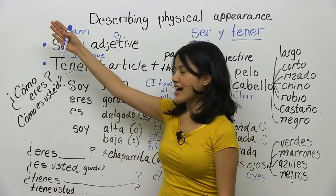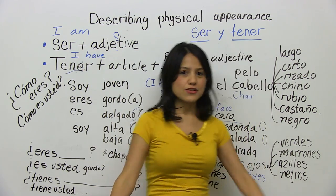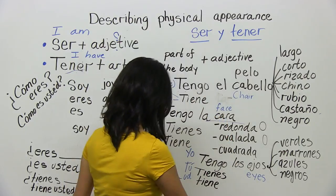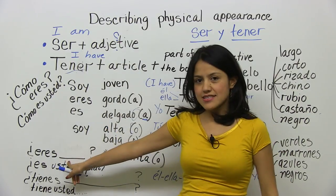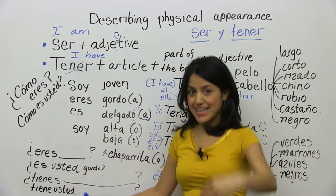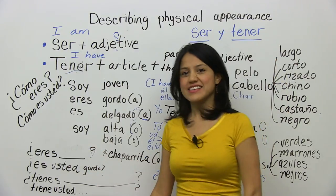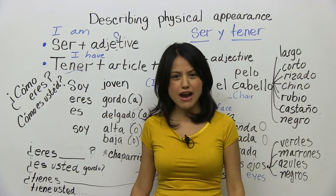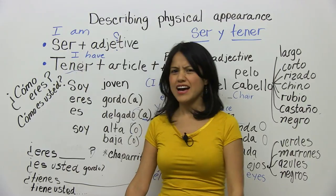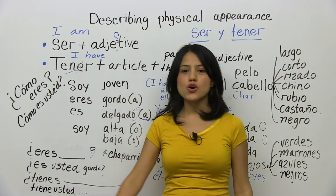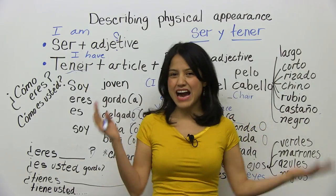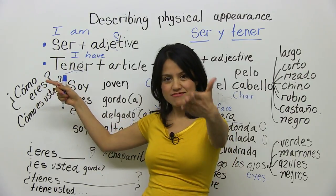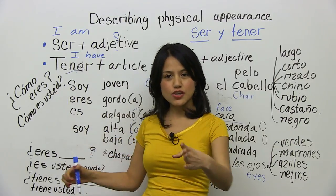So for some characteristics you use ser, for others you use tener. Soy — tengo. Soy y tengo. How are you going to ask? ¿Eres alto? ¿Eres bajo? ¿Eres alta? ¿Eres baja? ¿Es usted? ¿Tienes los ojos azules? — Do you have blue eyes? No, tengo los ojos cafés. ¿Cómo eres? — What's your appearance? ¿Cómo es usted? — formal, polite.